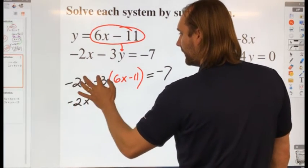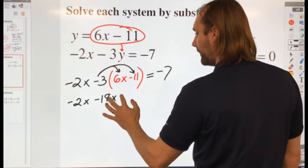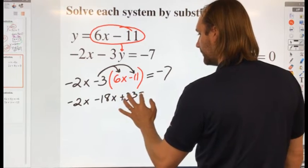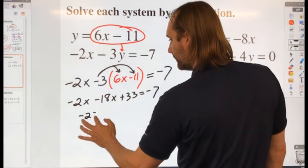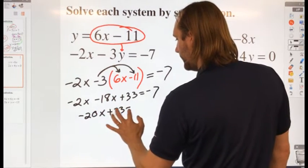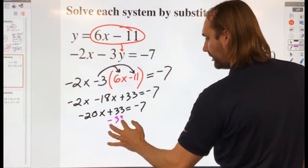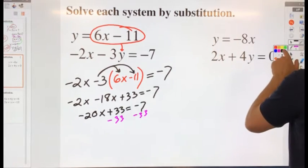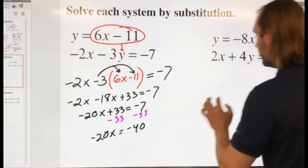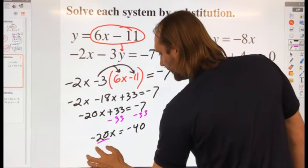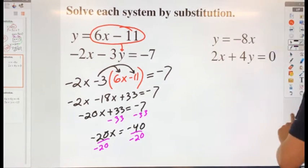And let's simplify and solve. So negative 2x, I'm going to distribute this negative 3, gives me negative 18x and a positive 33. Now I can combine my x values, that's negative 20x plus 33 equals negative 7. Let me isolate my variable, so subtract 33 on both sides. I get negative 20x equals negative 40, one final step, divide by negative 20, where I finally get my conclusion that x is equal to 2.